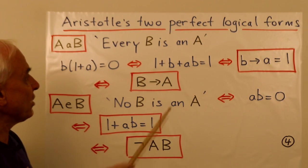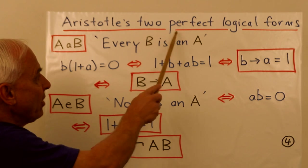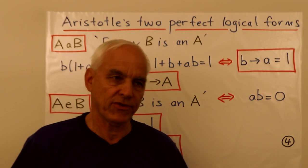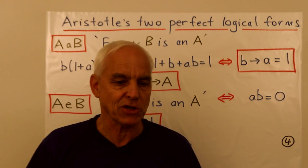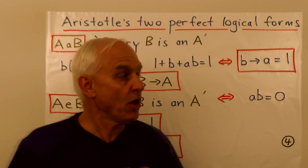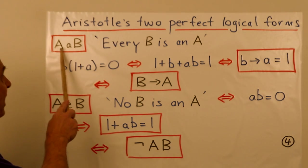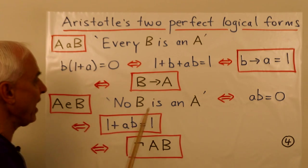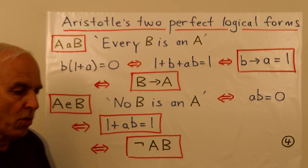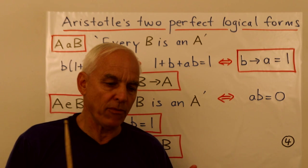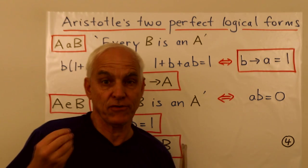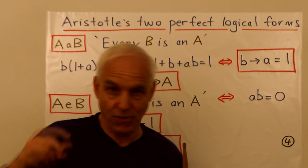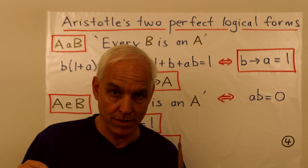So we're going to say that the first two are perfect logical forms. This is following somewhat Aristotle's terminology. So the forms a little a b and a little e b, every b is an a and no b is an a, these two forms have a crucially different character from the other two, the ones involving i and o.